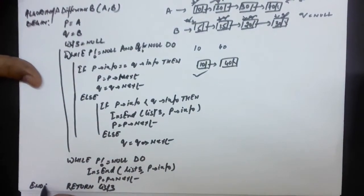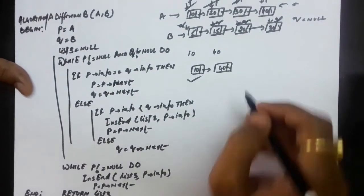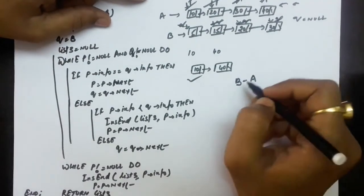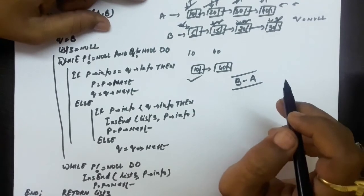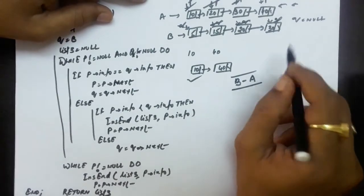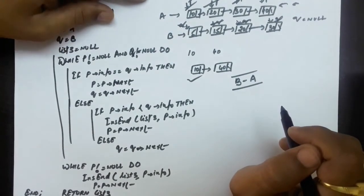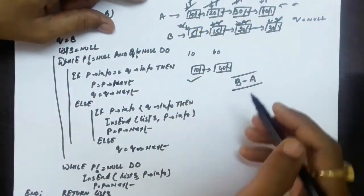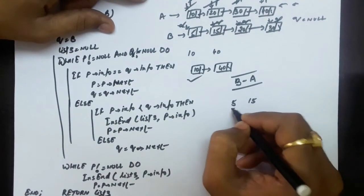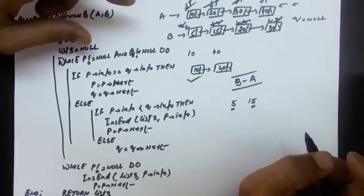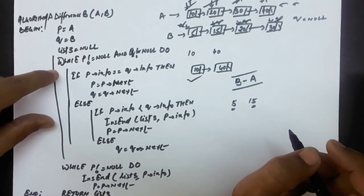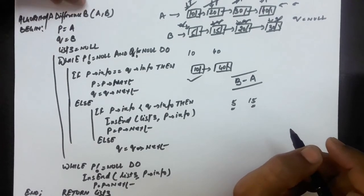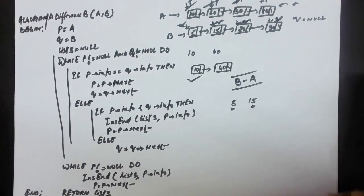If we have to perform B difference A, the information of only the second linked list is added, except what is common with the first linked list. For example, on these two sets, the answer would be 5 and 15. We just need to change the conditions accordingly — everything else will remain the same. I leave that with you to perform the B difference A. Thank you.